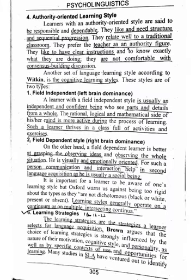The authority oriented learning style is where they prefer to learn from authority. They are dependent and responsible — this is the nature of this learning style.